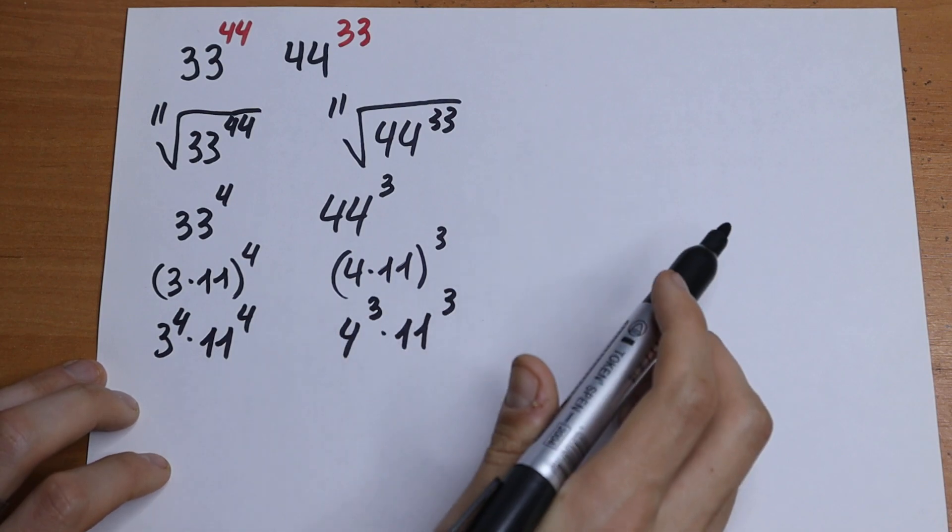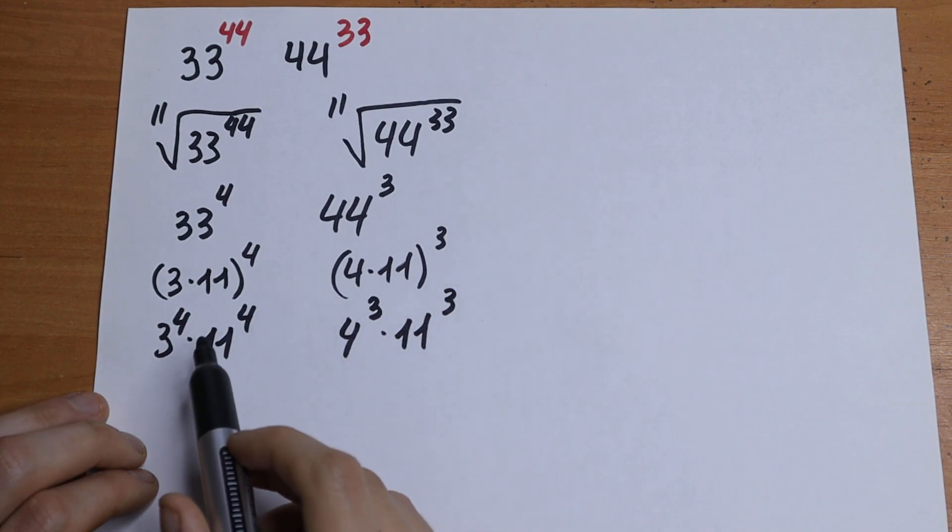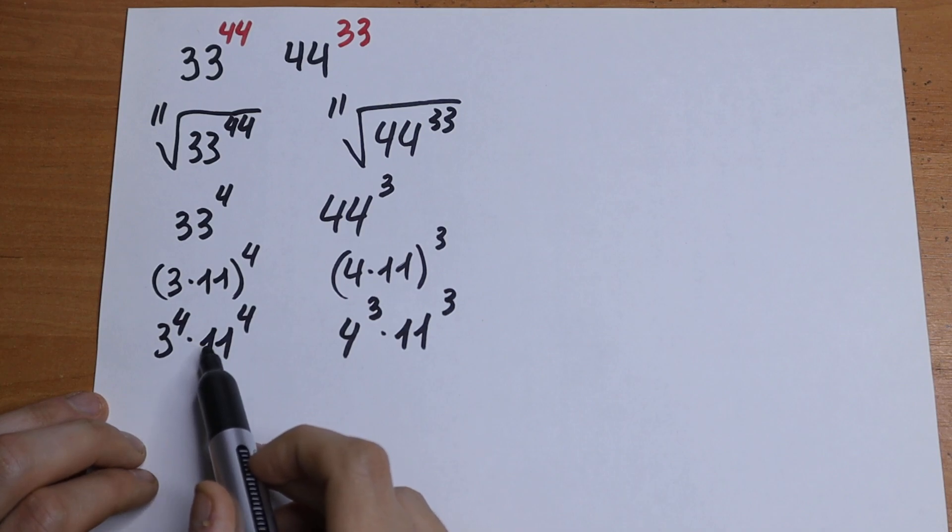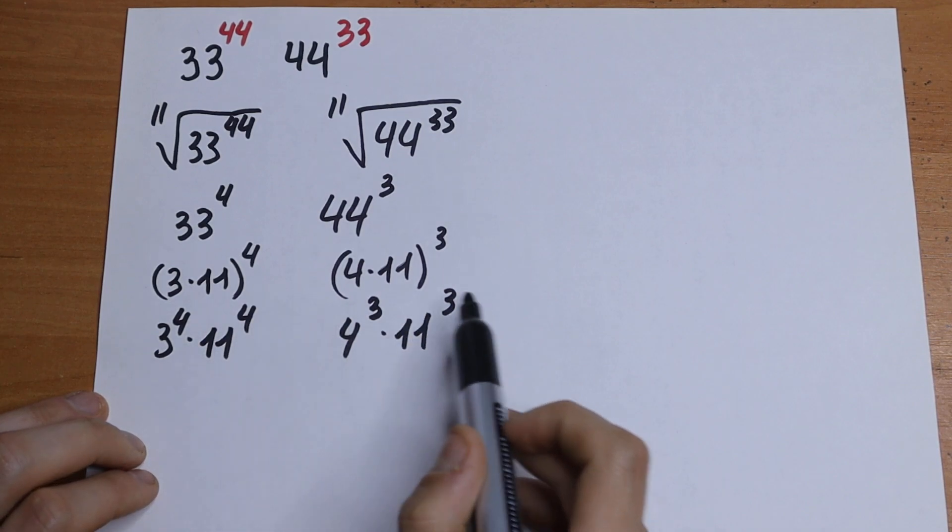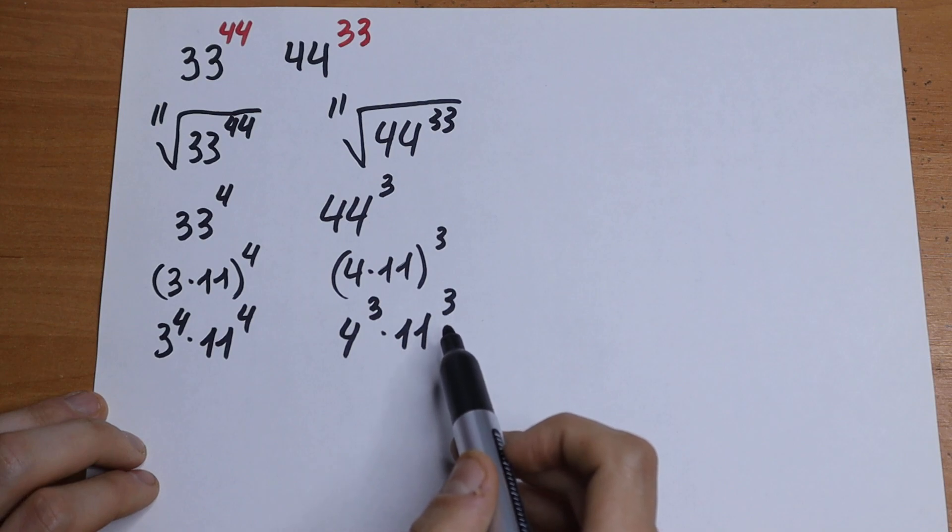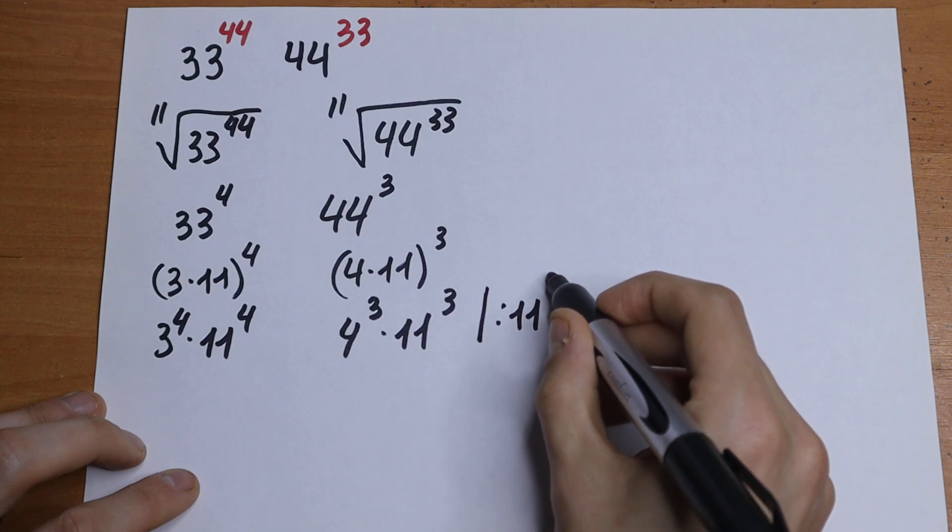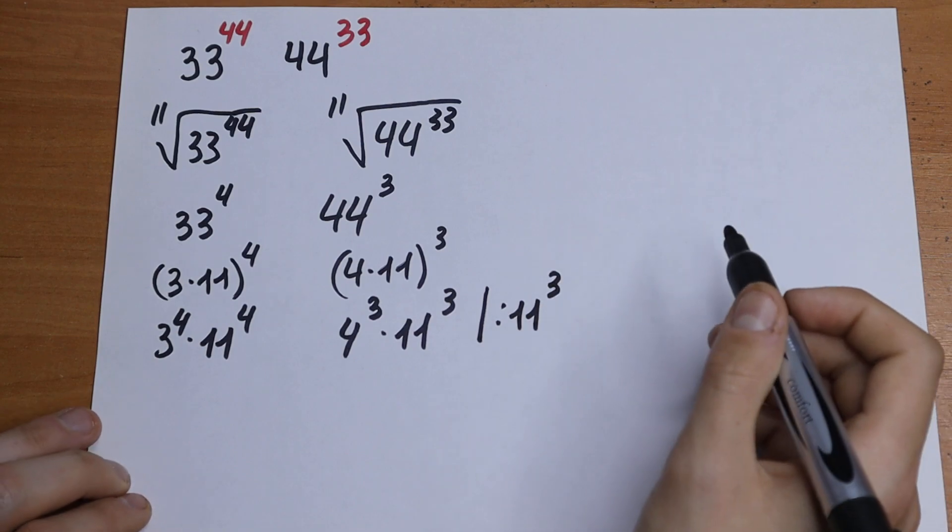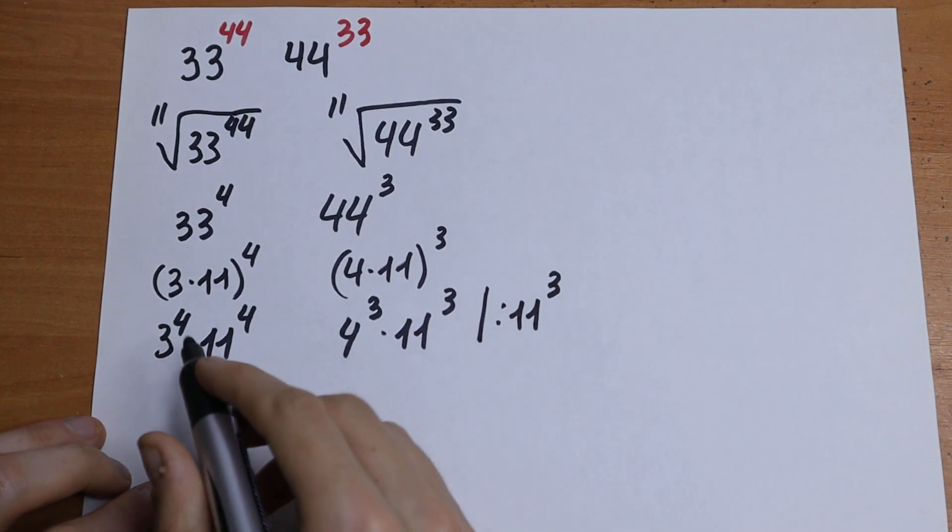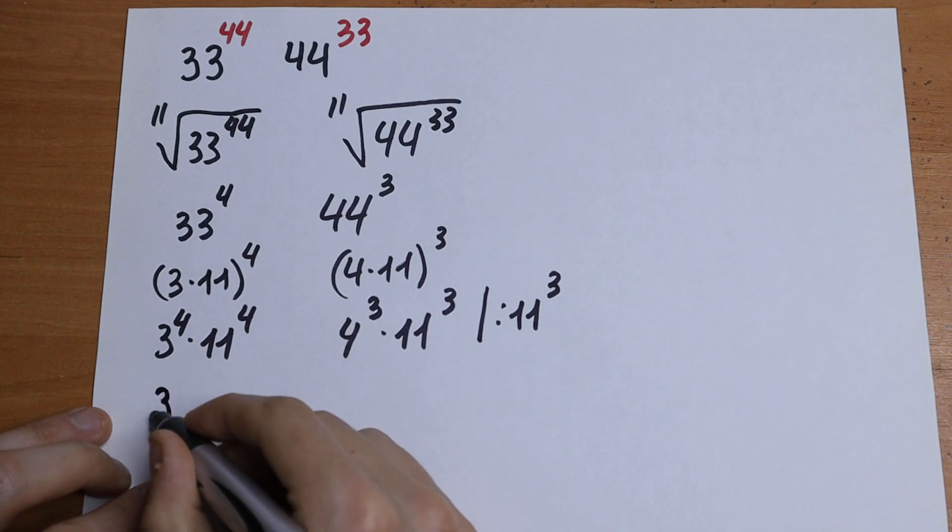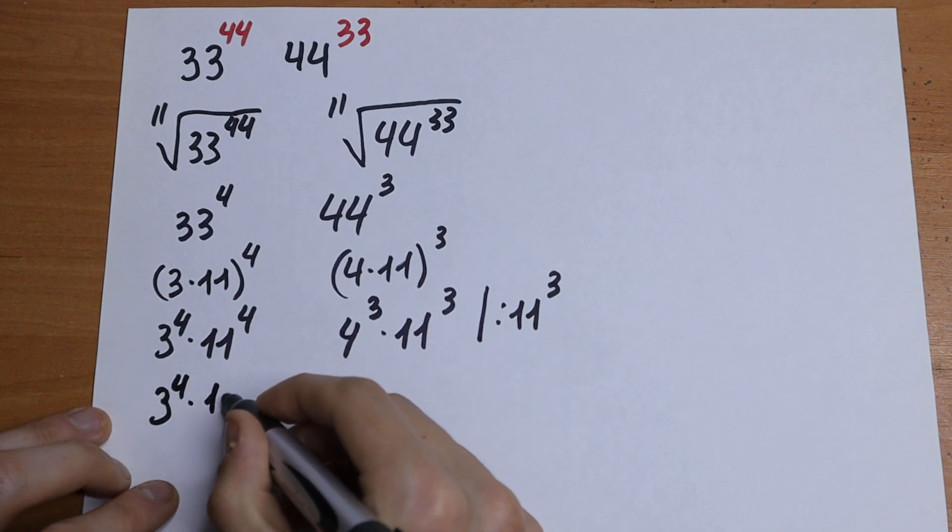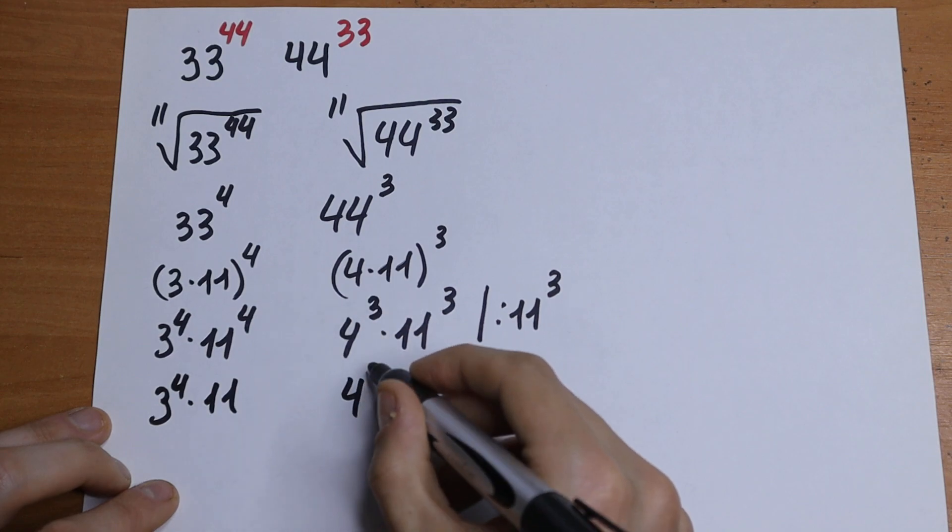So we just need to compare these variables. Right here we're multiplying by 11 four times and right here we're multiplying by 11 three times. So we can divide by 11 to the 3rd power. Right here we will have 3 to the 4th power times 11 and right here we will have only 4 cubed.